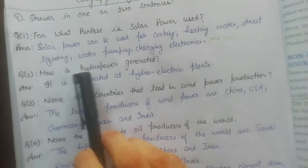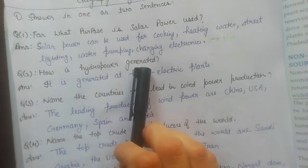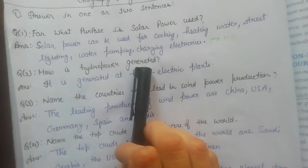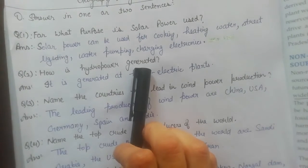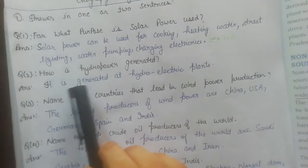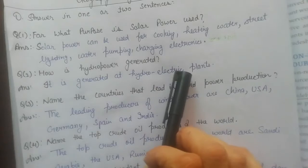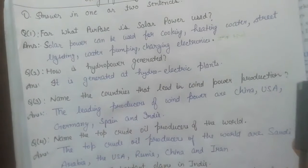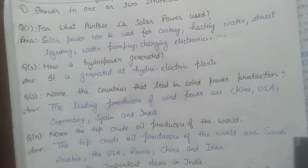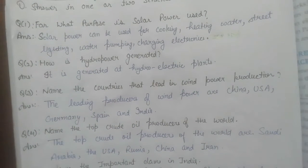Second question: how is hydropower generated? It is generated at hydroelectric plants. Hydropower is the power generated from water, and it is produced at these plants.